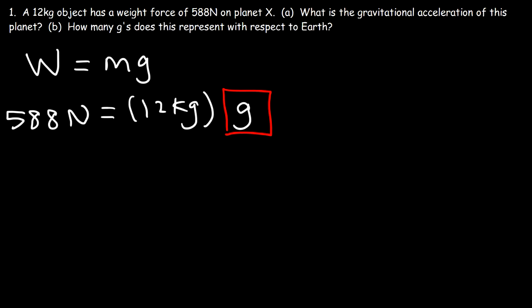So g is going to be 588 divided by 12. Which is 49 meters per second squared. So that's the gravitational acceleration of planet X.